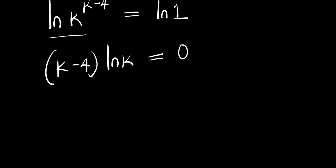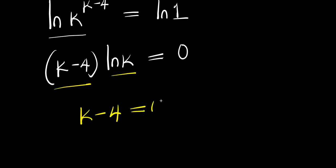At this particular point I can equate each factor to 0: I have k minus 4 equals 0, and I have natural log k equals 0.